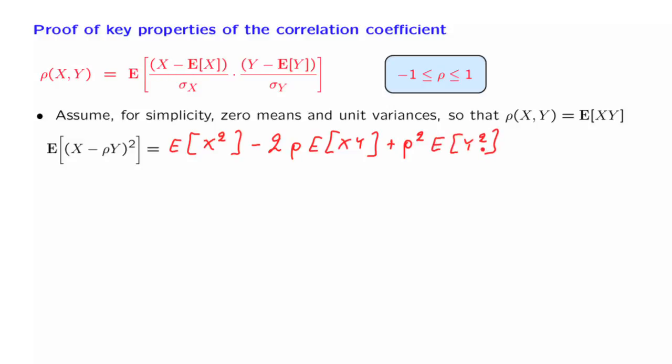Now, since we assume that the random variables have zero mean, this is the same as the variance. And we assume that the variance is 1. So this term here is equal to 1.